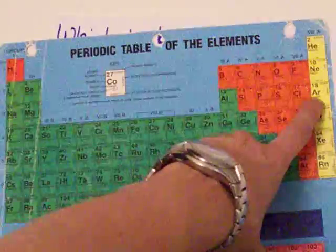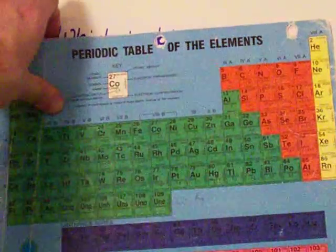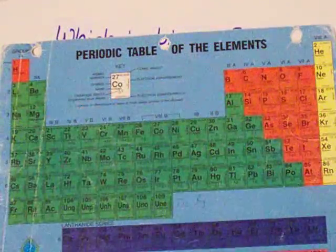Phosphorus normally has 15, but you add three because it gets a charge of minus three. So, it gets 18 electrons as well.